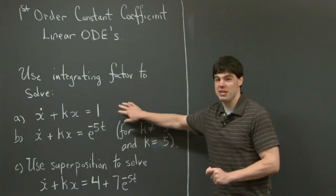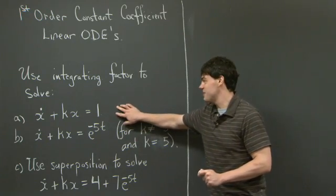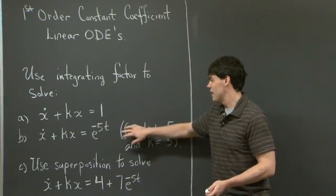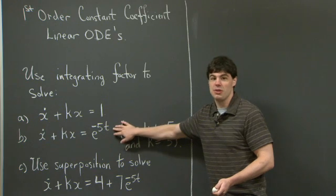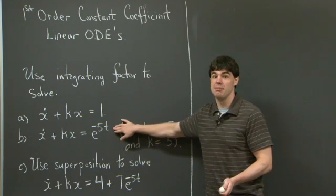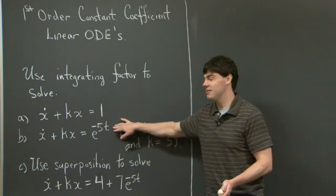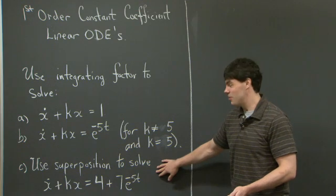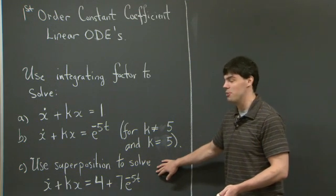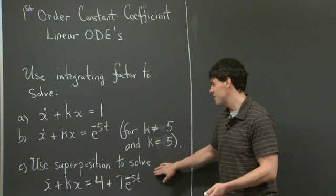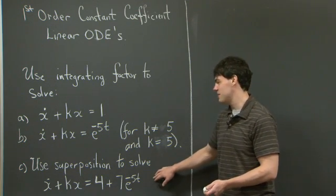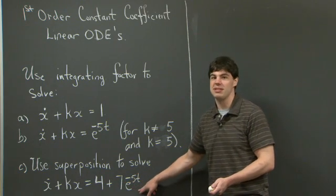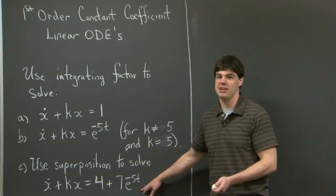The equation that we're going to solve today is x-dot plus kx equals 1. And then in Part B, we're going to change the right-hand side to e to the minus 5t. And then in Part C, we're asked to use the superposition principle to solve x-dot plus kx equals 4 plus 7e to the minus 5t.